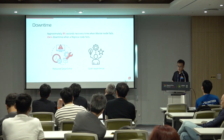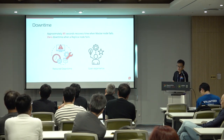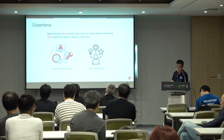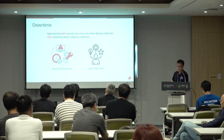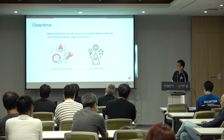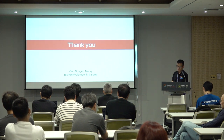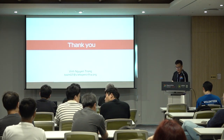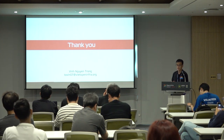Next is the downtime. We tested many times and found approximately only 85 seconds of recovery time when the master node fails, and there is no downtime when a replica node fails. With this model, the downtime is reduced significantly compared with the default mode, which can take around 5 to 10 minutes of downtime. That's all of our presentation today. Thank you very much for listening. If you have any questions after this presentation, here is our contact information. Thank you.